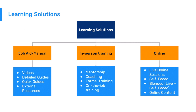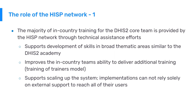When we review learning solutions, we can break these down into several categorizations. Examples include job aids, in-person training, and online training. Each of these types has various methods that can contribute to a broader training solution, and it is typical for these learning solutions to be combined to obtain a useful outcome. The majority of in-country training is performed by the HISP network through technical assistance efforts, supporting development of skills in broad thematic areas similar to the DHIS2 Academy. However, these skills are applied to the specific implementation rather than generic principles seen during global and regional trainings.